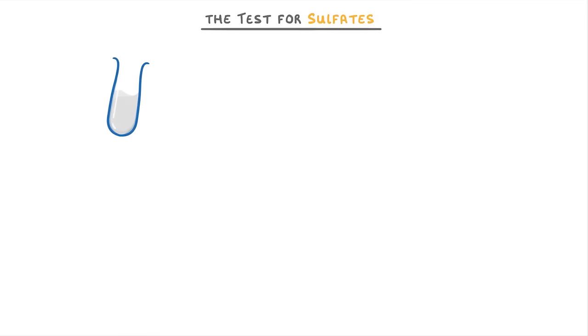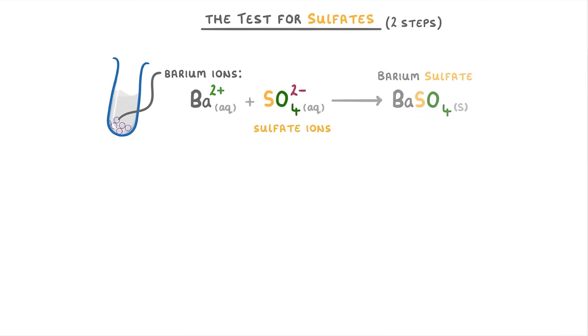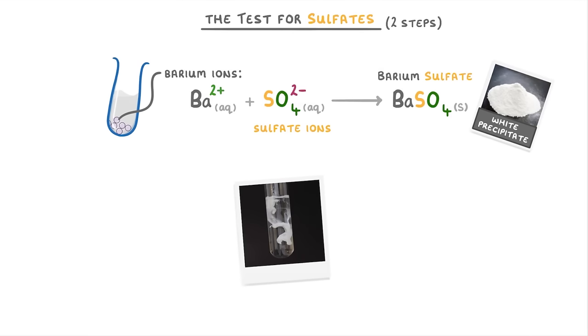Next up we have the test for sulfates, which also has two steps. The idea behind this test is that if we add barium ions to our test sample, then they'll react with any sulfate ions present to form barium sulfate, which importantly is a white precipitate. So if we see a white precipitate forming, then we call that a positive result, and it tells us that sulfates are present in our sample.